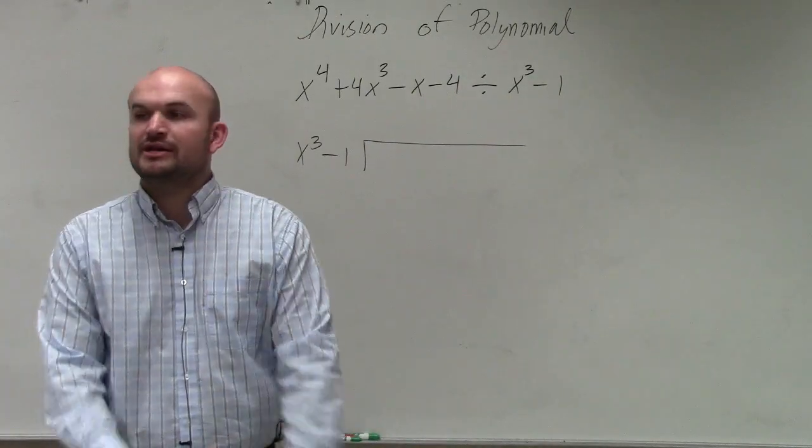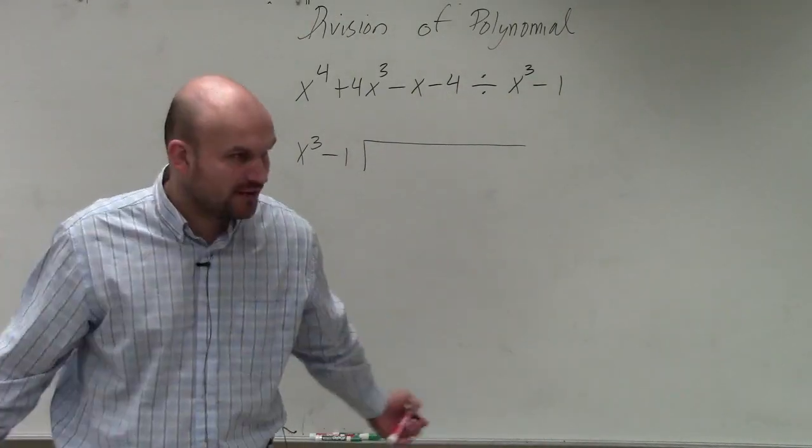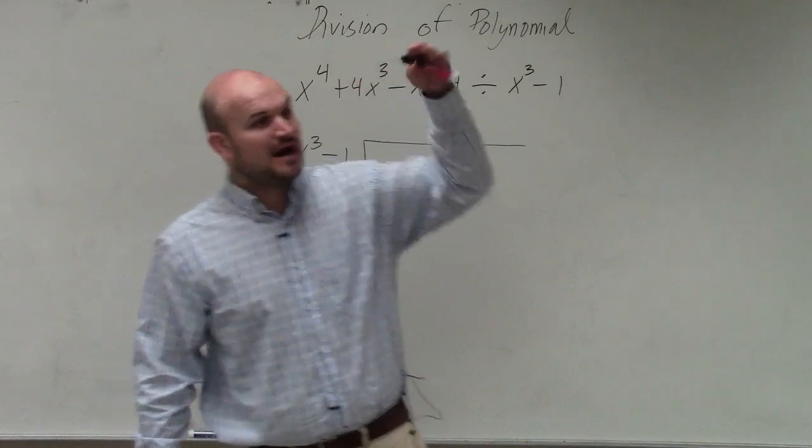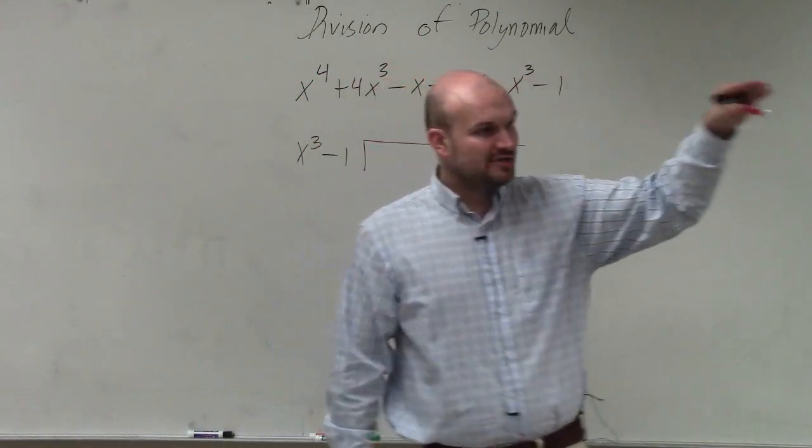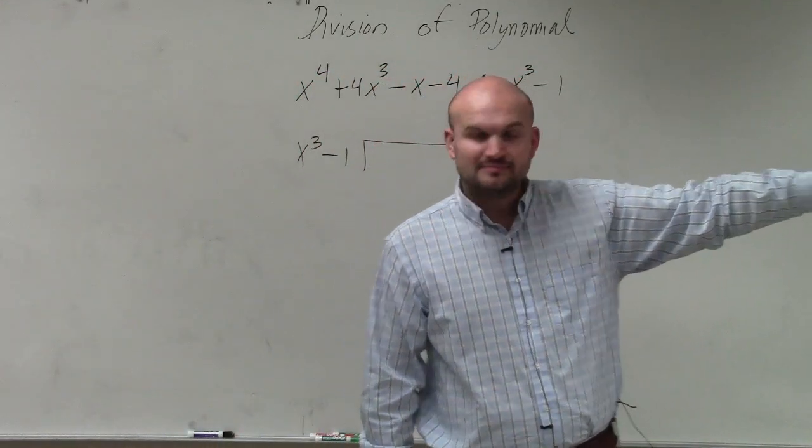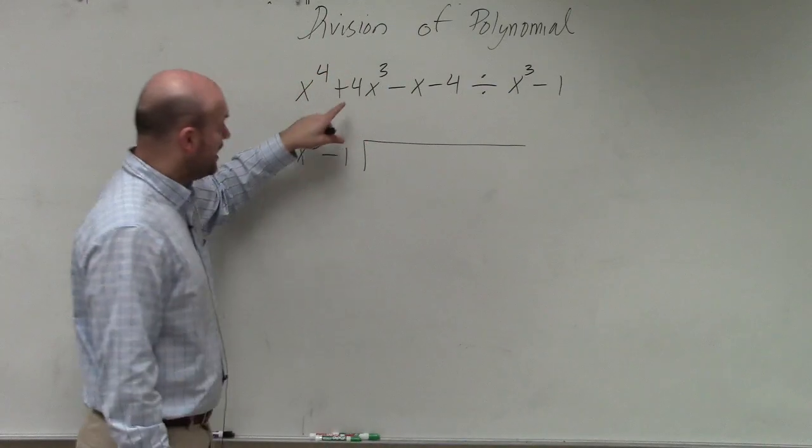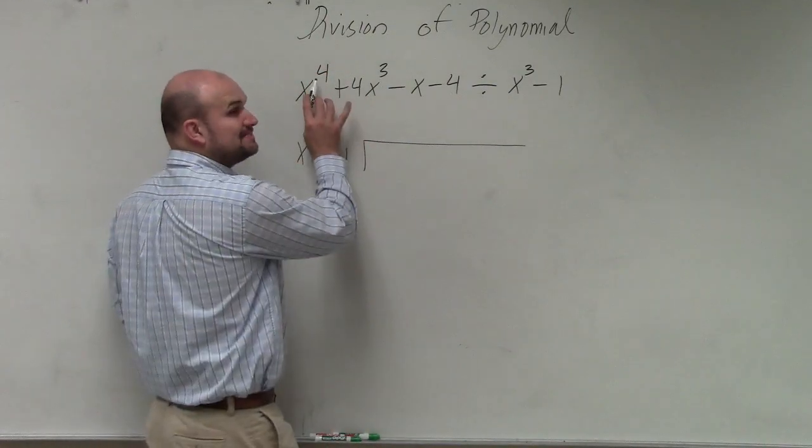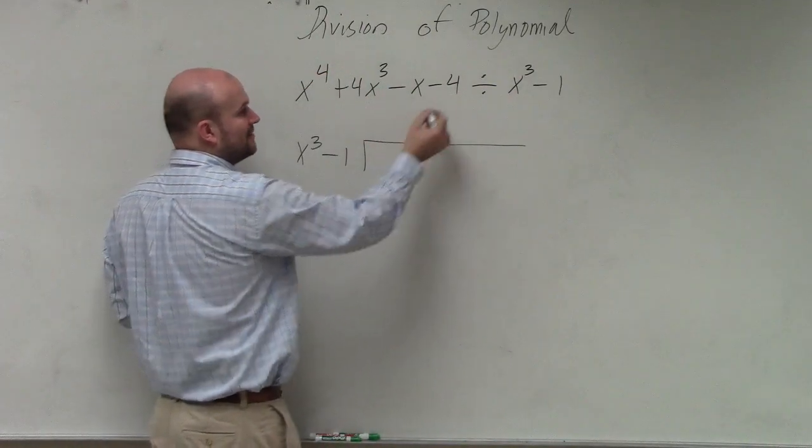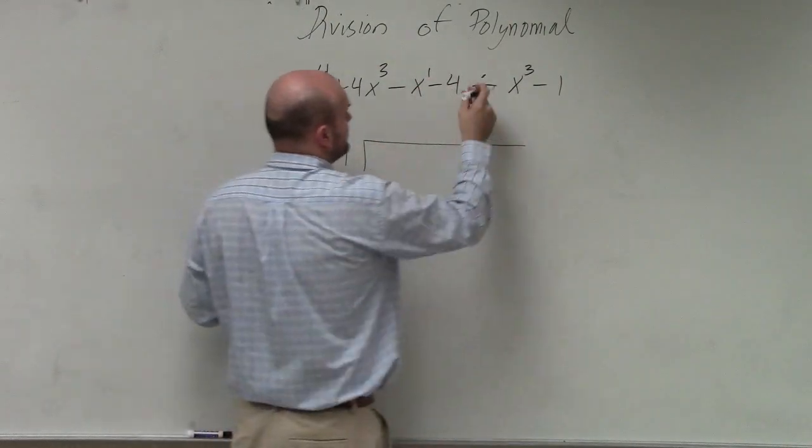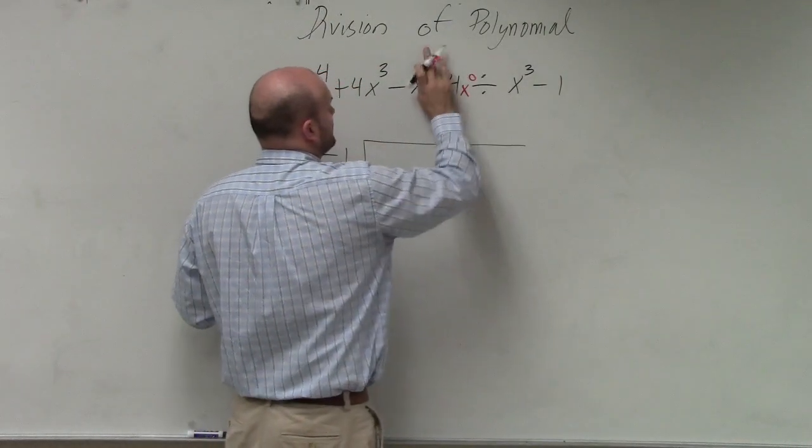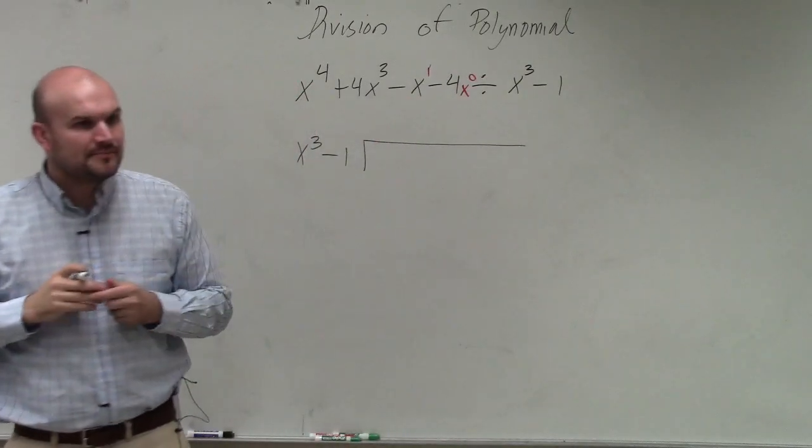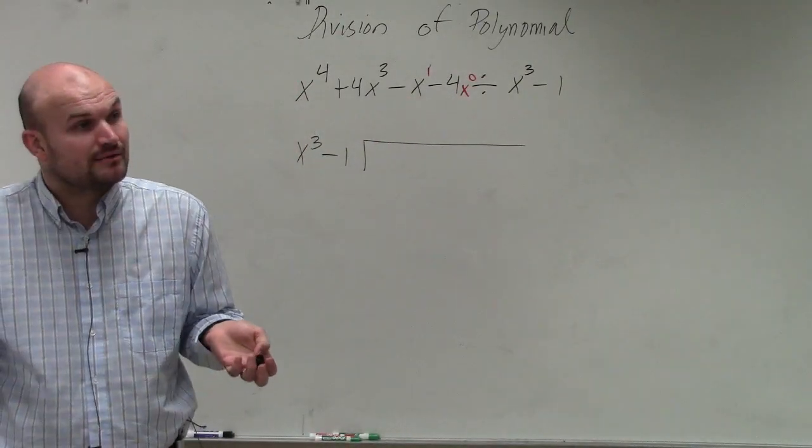Now, the main important thing is we want to make sure that we have everything in standard form. Remember, standard form is we have our highest power, which is our degree first, and then we go down in descending order. You guys can see that my highest power is going down, but I'm also missing a number. Do you guys see that I'm missing x squared?